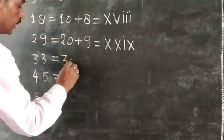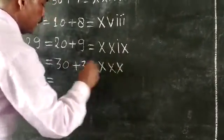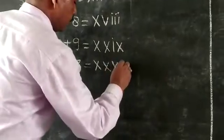33: 30 plus 3. 30 in Roman numerals is XXX and 3 is III, so XXXIII.